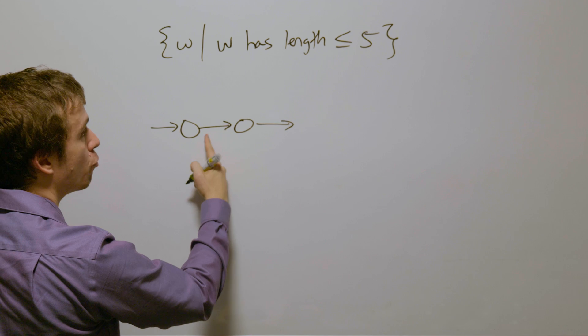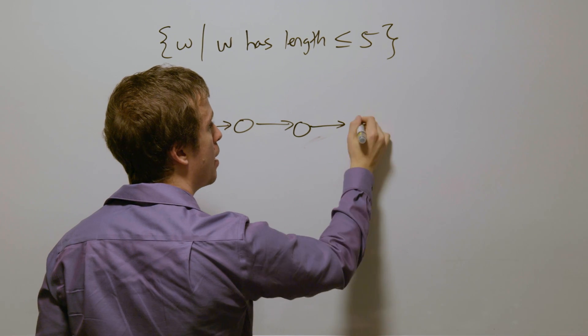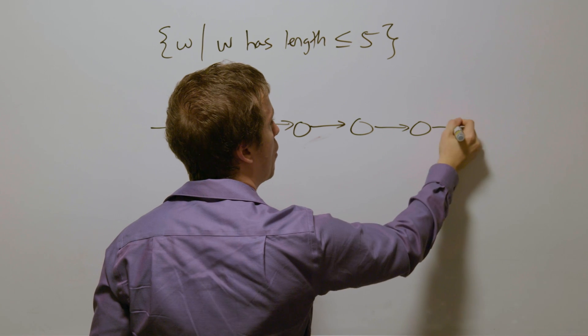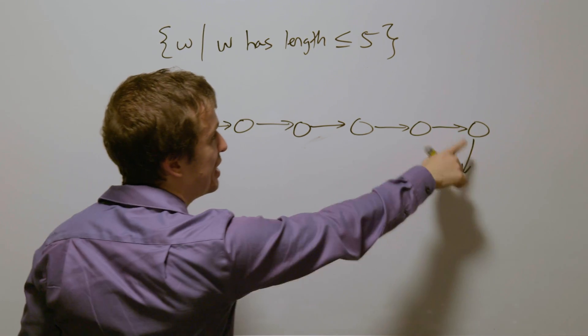So here's one transition, which means we've read one thing, we've read two things, we've read three, we've read four, we've read five.